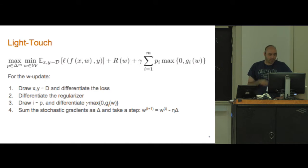The w update is basically the same as before. We're going to draw x and y according to d and differentiate the loss. We're going to differentiate the regularizer.